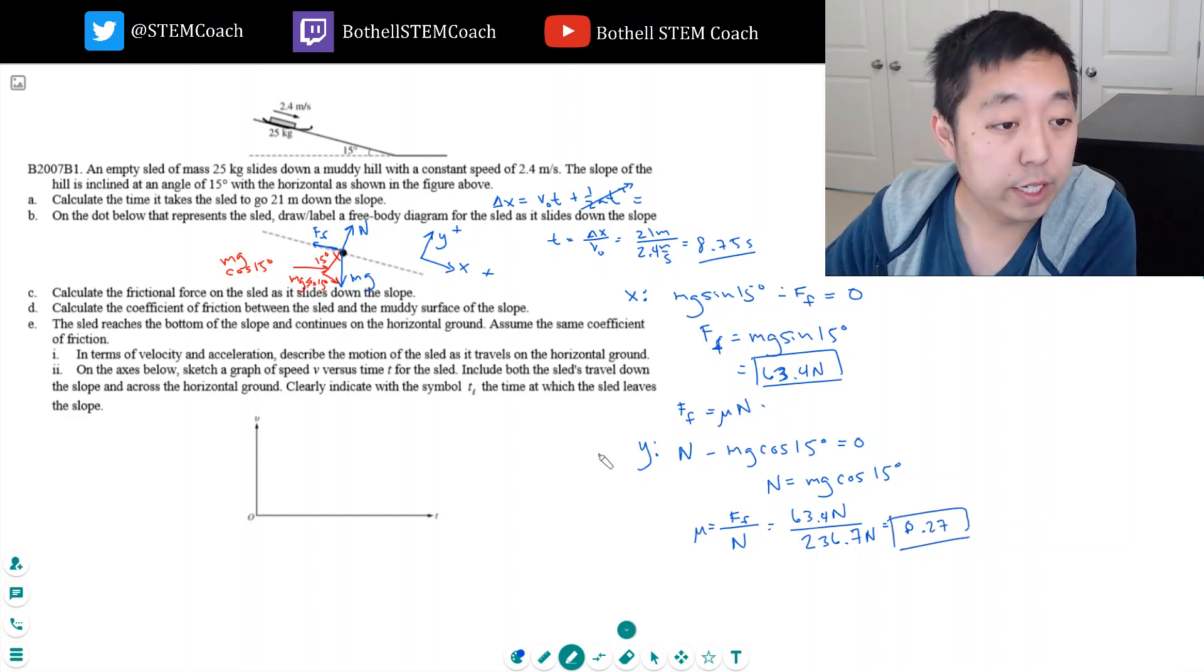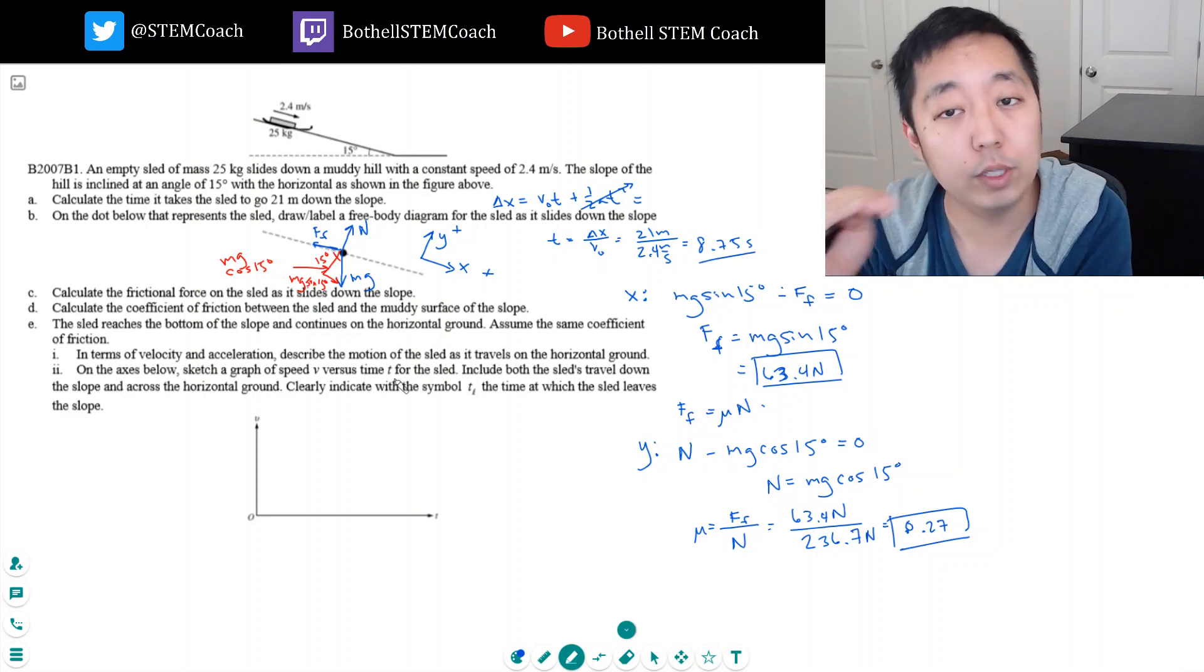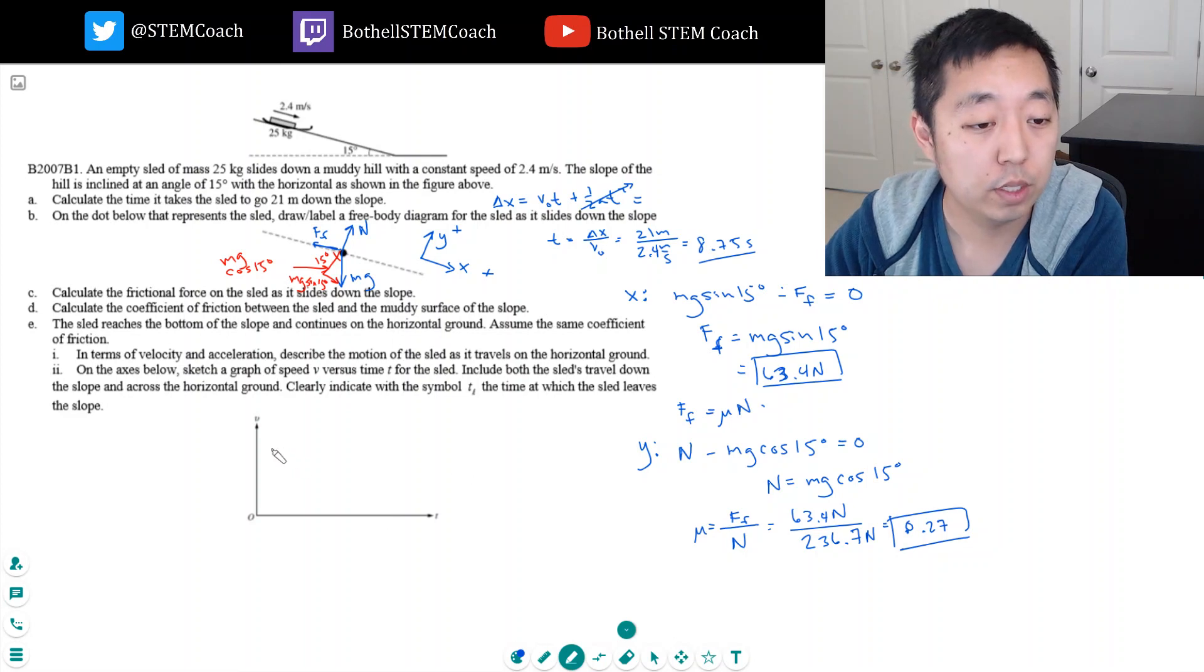Okay, looking good. The sled reaches the bottom of the slope and continues on the horizontal ground. Assume the same coefficient of friction. In terms of velocity and acceleration, describe the motion of the sled as it travels on the horizontal ground. Well, now the only thing it has is friction acting on it, so it's going to slow down. So it's going to start off at 2.4 meters per second and it's going to stop at some point.